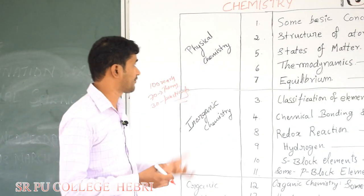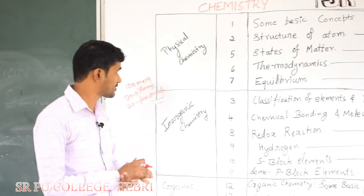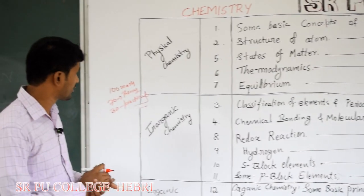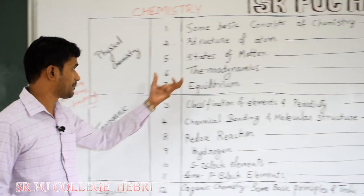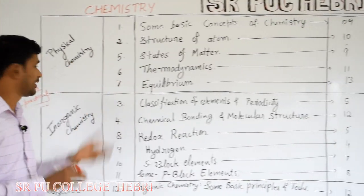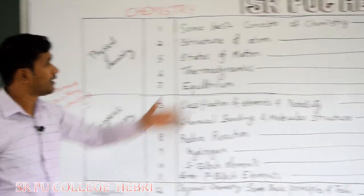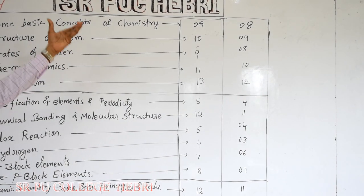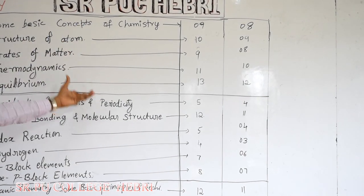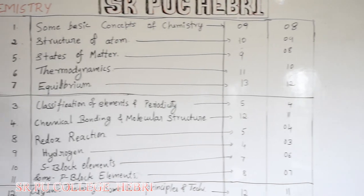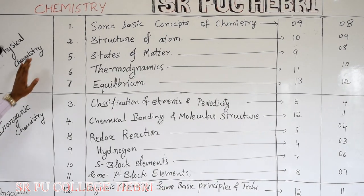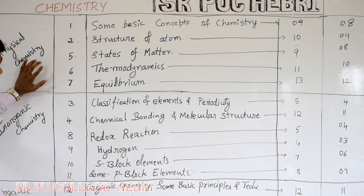Let us now see the different parts of chemistry that you are going to study in your pre-university course, the chapter names in each part, the total number of hours allotted for those chapters, and the total weightage of marks. It is already written here — once you go through it. In physical chemistry, the first part of chemistry, there are 5 chapters.